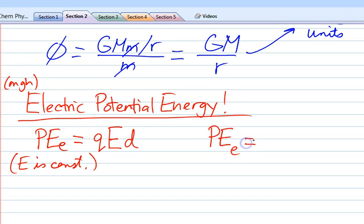And the long way to write it, remember we had GMM over R, is K, big Q, little q, over R. And so this is two expressions for electric potential energy.